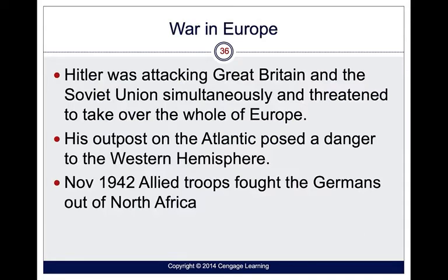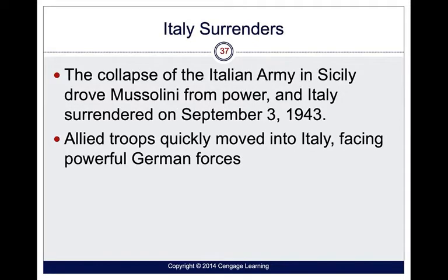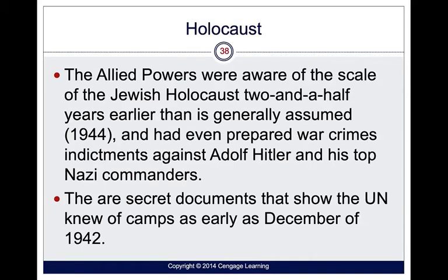Back to the European Theater: Hitler was attacking Great Britain and the Soviet Union simultaneously and threatened to take over all of Europe. In November of 1942, Allied troops fought the Germans out of North Africa. Italy's army finally collapsed; Mussolini was driven from power in Sicily, and Allied troops moved into Italy, facing powerful German forces. We also started to become knowledgeable about the Holocaust — there are beliefs the Allies were aware of it in 1944 and were even preparing war crimes indictments against Hitler and his top Nazi commanders.